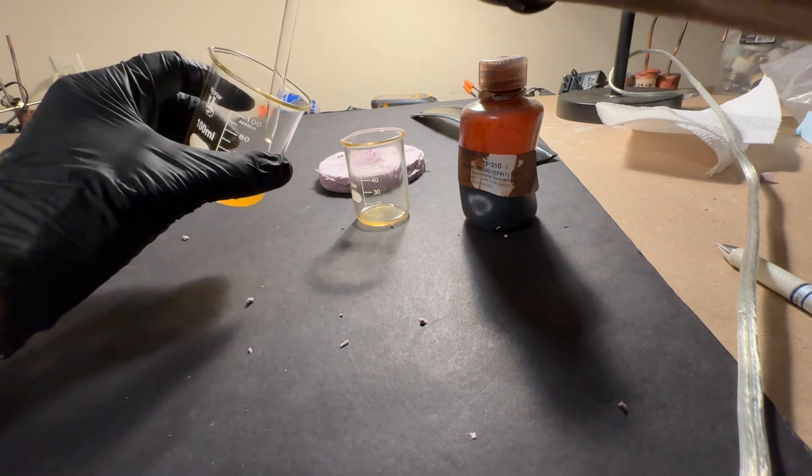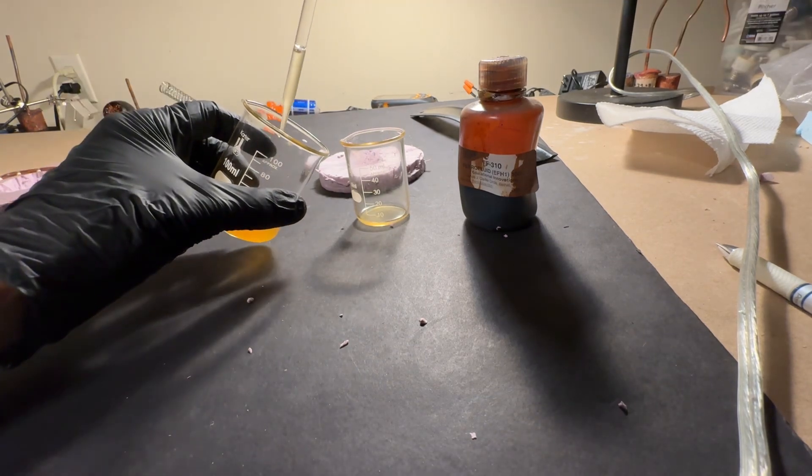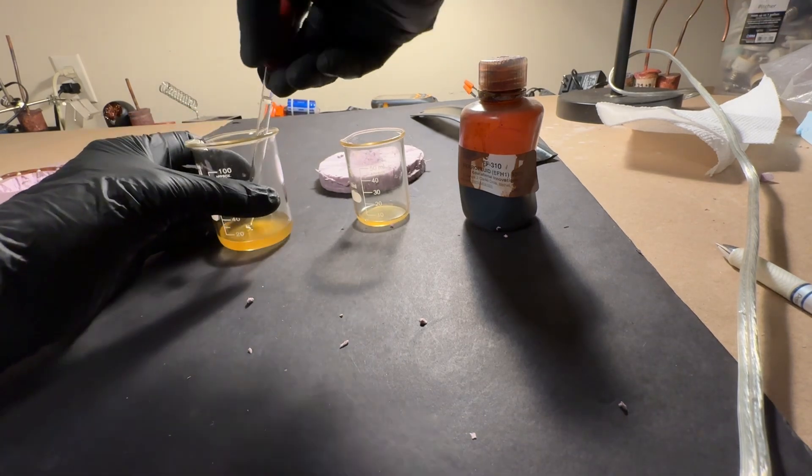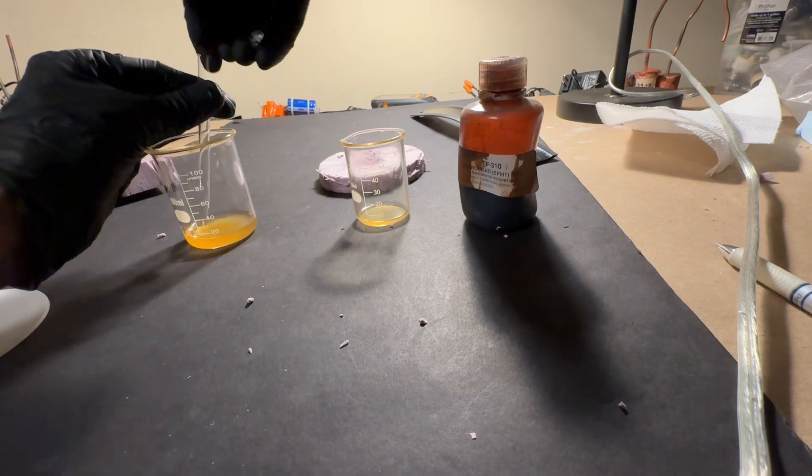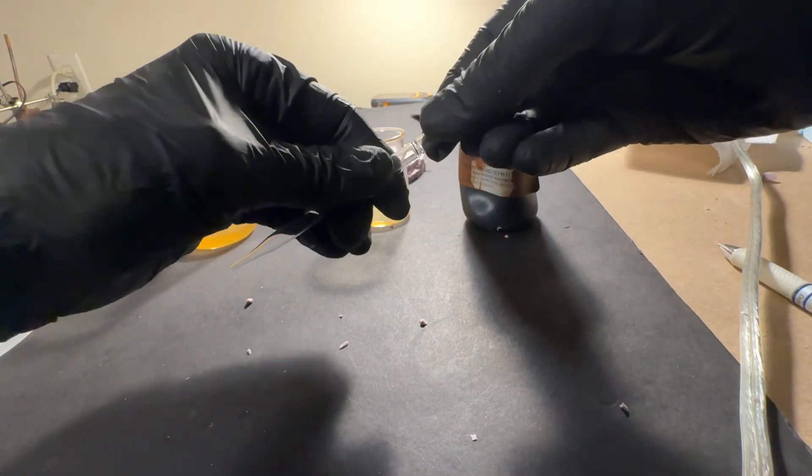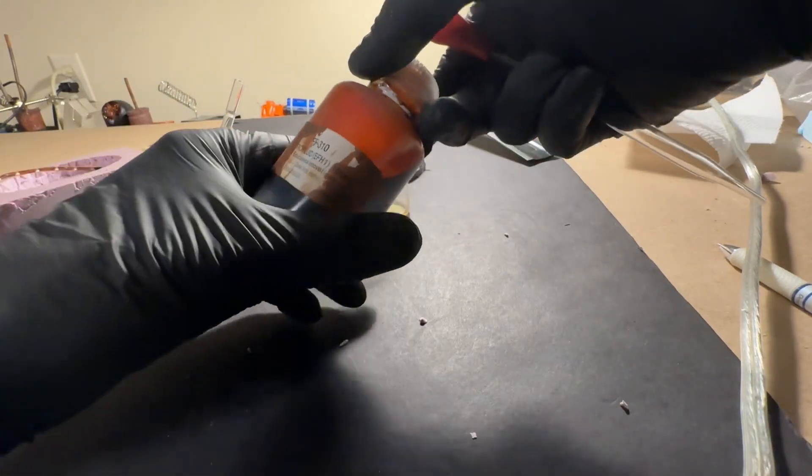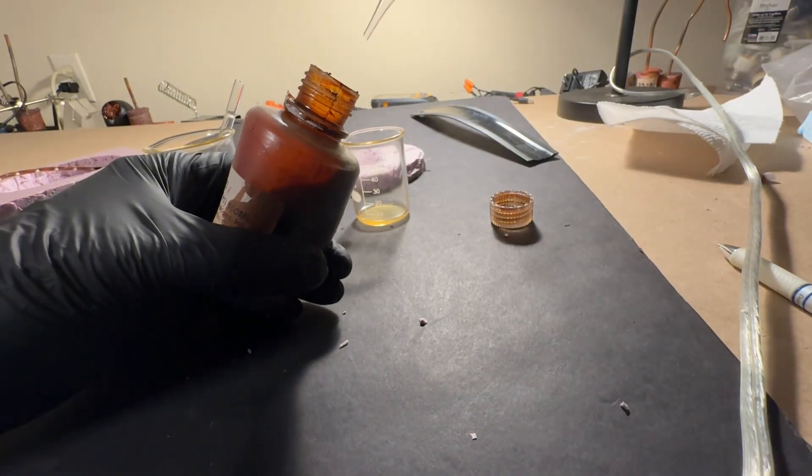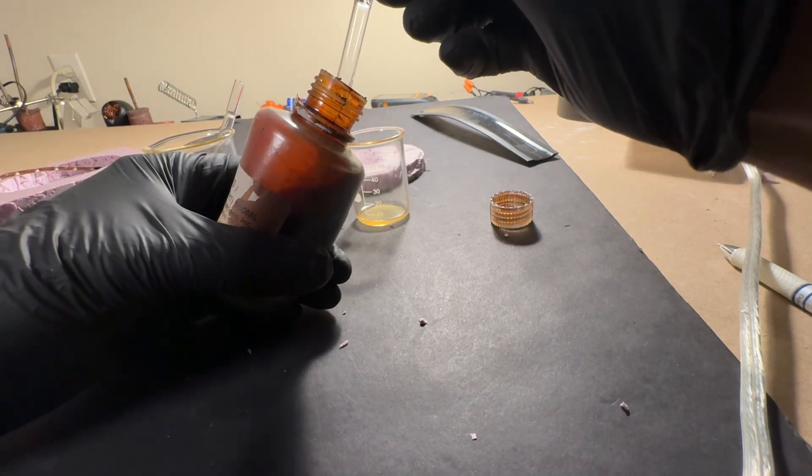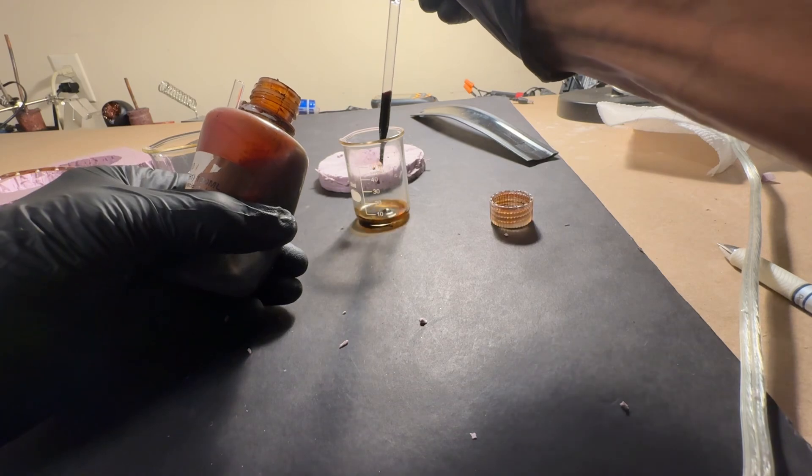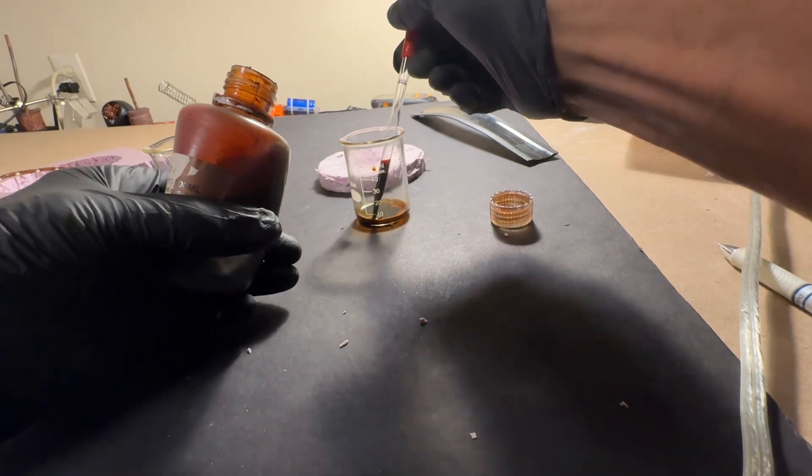So we're going to take two parts of WD-40 and squirt them in the smaller beaker. You don't need a lot of this stuff. Then we're going to take one syringe of ferrofluid and put it in the same beaker.